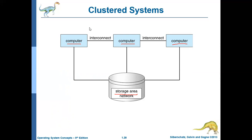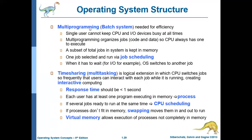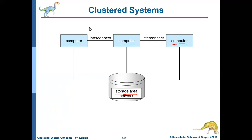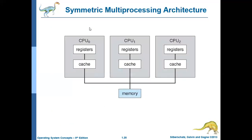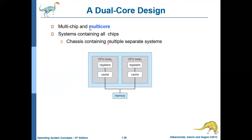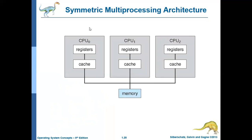To summarize: we discussed an example of symmetric multiprocessing architecture. We discussed that multiprocessors can be of two types — multi-chip or multi-core. In multi-chip, every processor has a separate chip. In multi-core, a single chip can have multiple cores. All multi-core architectures are also multiprocessing architectures, but not all multiprocessing architectures are multi-core. For example, the multi-chip architecture is not a multi-core architecture, but it is a multiprocessing architecture.